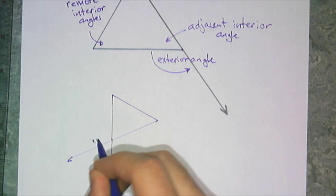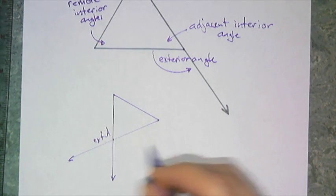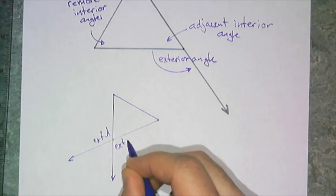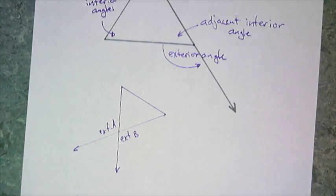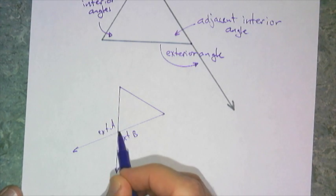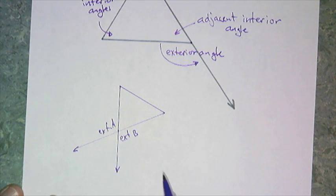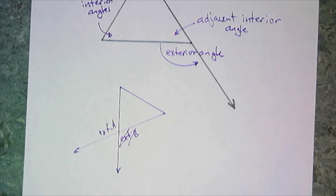But what do you notice about this exterior angle, exterior angle A and exterior angle B? What do you notice? Well, those are vertical angles, right? Because they're coming in the lines. So even though there are two exterior angles at every vertex, we usually only talk about one for every vertex.